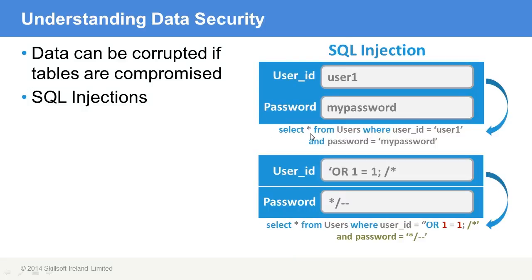If it's a select statement being processed in the background, then you open yourself to what's known as SQL injection code. That means actual code is inserted into the field as opposed to a regular value. If you enter in this code, the select statement ends up looking like: SELECT * FROM users WHERE user ID equals a closed-off set of quotes — a blank string — OR one equals one. When you submit any criteria to the query analyzer, it simply evaluates whether that statement is true, and one equaling one is always true.